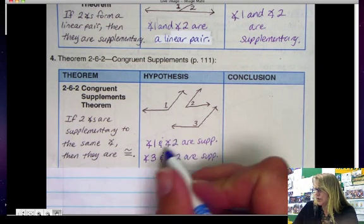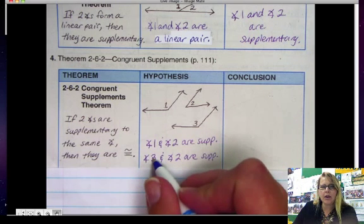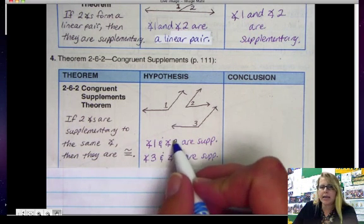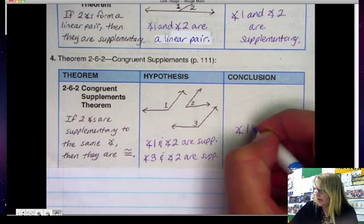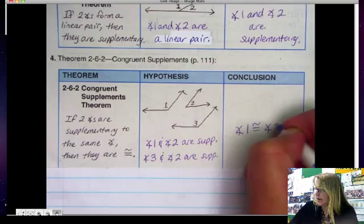So if that's true, angle 1 and 3 are supplementary to the same angle 2. Therefore, our conclusion is angle 1 is congruent to angle 3.